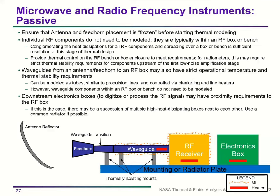Downstream electronics boxes for digitizing or processing an RF signal may have proximity requirements for coaxial cables or other connections. RF designs often feature a succession of multiple high-heat-dissipating boxes — one for digital signal processing, one for compression, or simply the main instrument electronics box — which can often be grouped into one thermal zone with a common radiator.